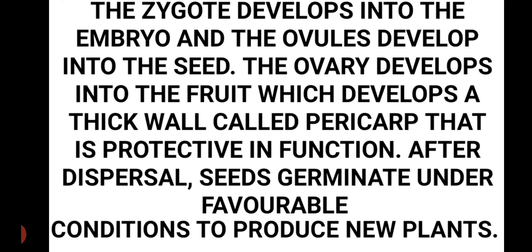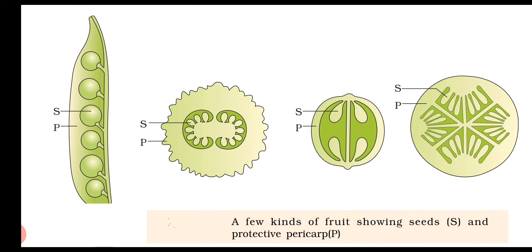After dispersal, the seed will germinate under favorable conditions and produce a new plant. In this diagram, S represents the seed and P represents the pericarp, illustrating fruits in which seeds and pericarp are denoted.